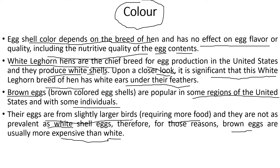Brown eggs are not as prevalent as white shell eggs, which is why they are usually more expensive. Brown eggs do occur in hens but only in a limited number of breeds. We may also observe brown or larger eggs from birds such as ostriches, which produce larger eggs because the bird requires more food. These are not widely available, which also contributes to their higher cost.